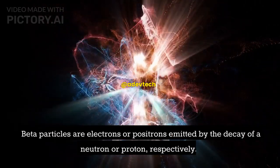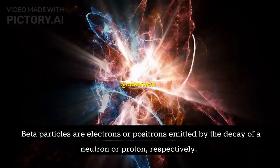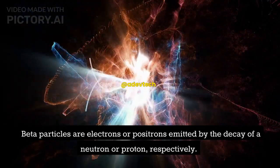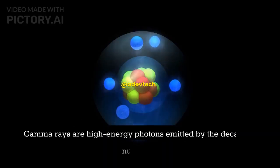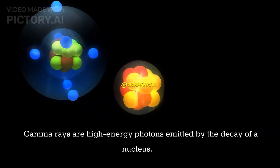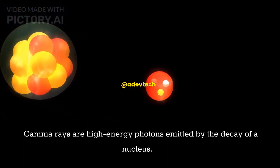Beta particles are electrons or positrons emitted by the decay of a neutron or proton, respectively. Gamma rays are high-energy photons emitted by the decay of a nucleus.